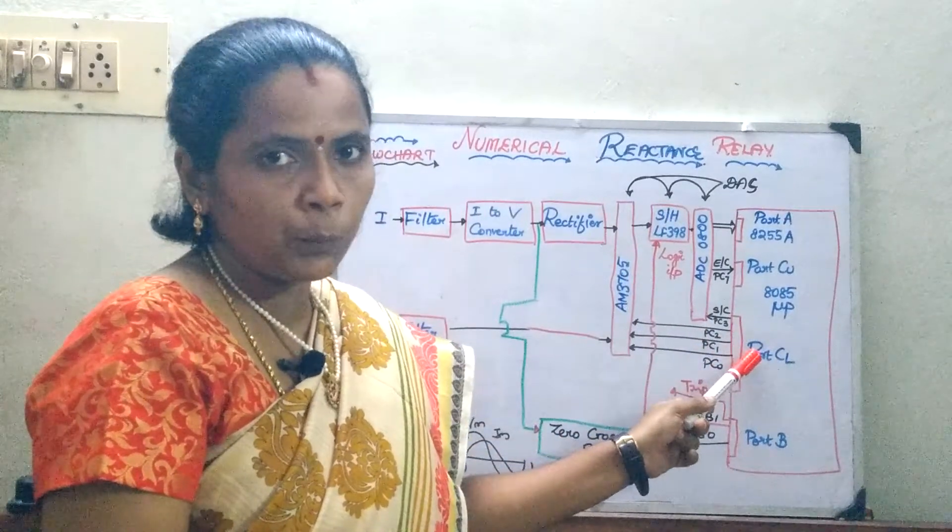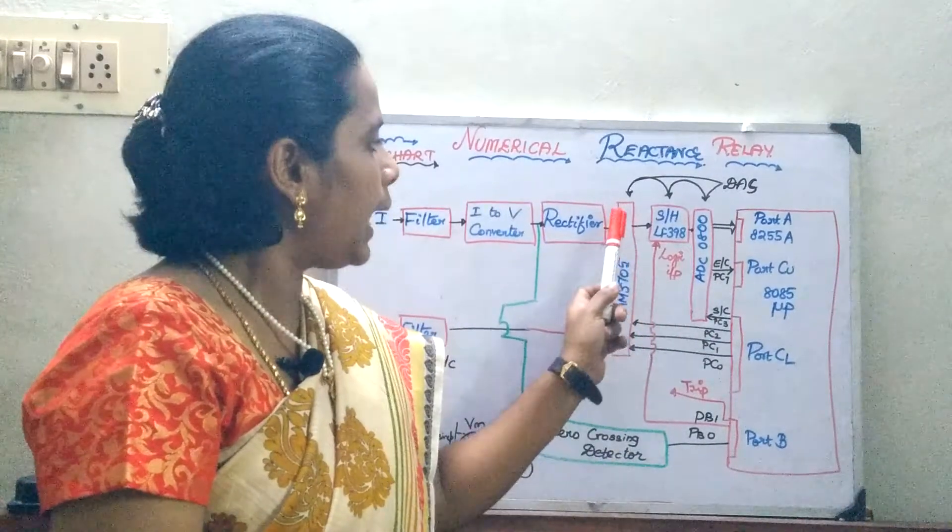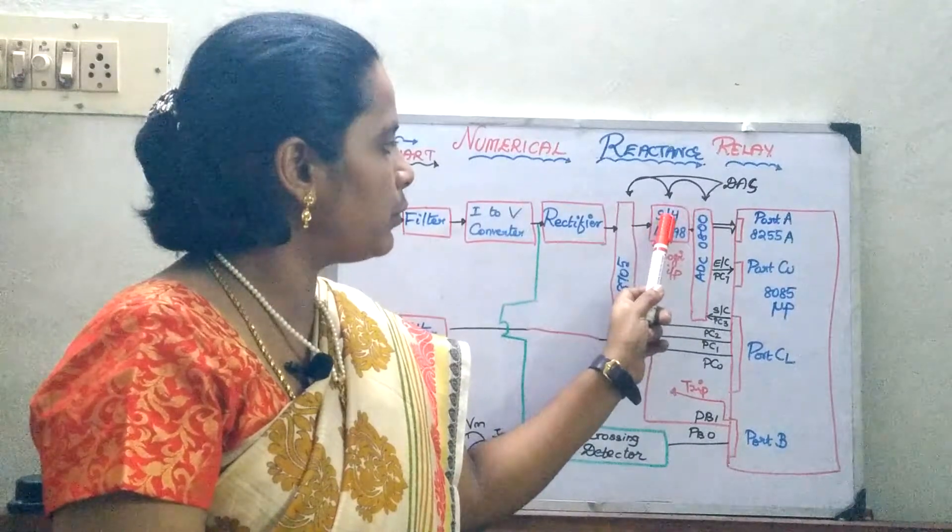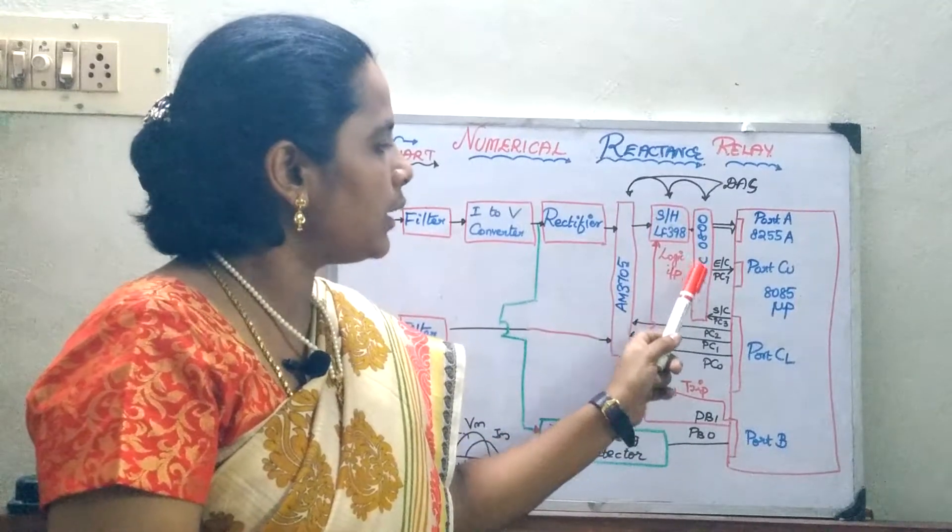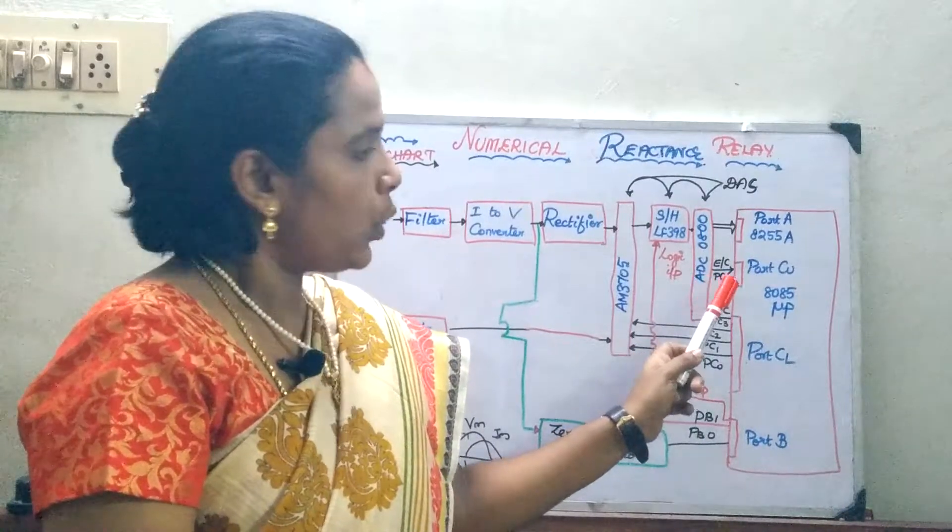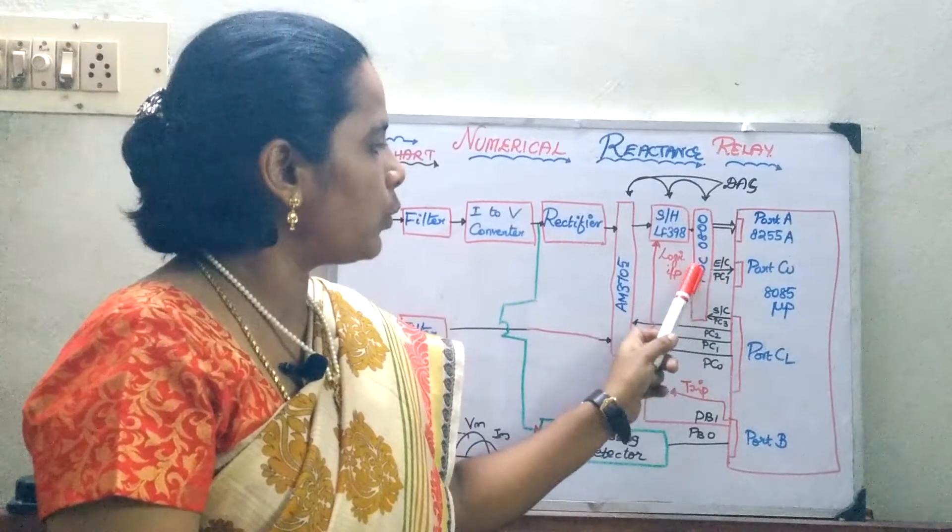Of course, the mux will receive from the port C lower of the microprocessor, it will receive the particular channel to be selected. And then the start of conversion, that is your sample and hold circuit will give the signal to the ADC. Then microprocessor will give the signal that start of conversion can take place. Once this start of conversion is done with, then what will happen? It will start converting your analog values to digital values.